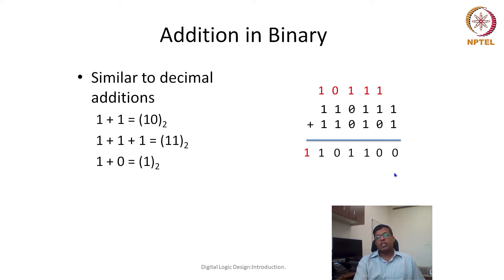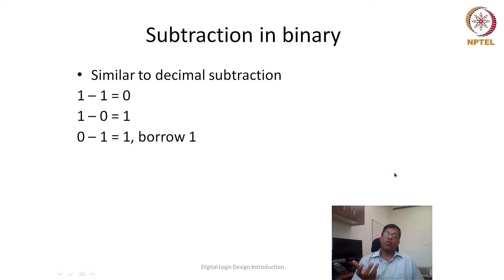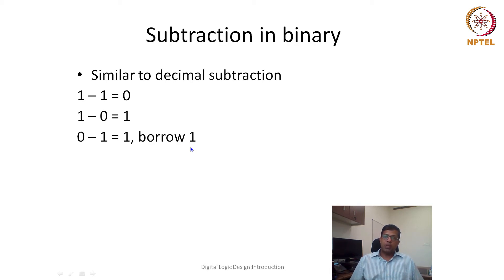The next question is: can we do subtraction? Subtraction can also be done in a very similar way. We can say 1 minus 1 is 0, and 1 minus 0 is 1. But if we need to subtract 0 minus 1, we need to take a borrow. After taking the borrow it becomes 10 in binary, and 10 minus 1 gives output 1. We need to remember that we have taken a borrow, just like in decimal subtraction.